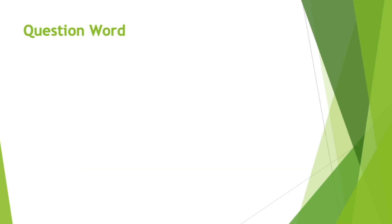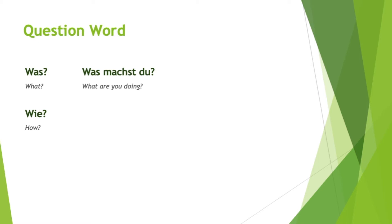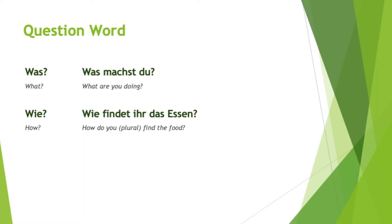But what if you want to ask 'when does she work' or 'where does she work'? You need question words. You already know some of them: 'was' means 'what,' for example 'Was machst du?' — What are you doing? 'Wie' means 'how,' for example 'Wie findet ihr das Essen?' — How do you guys find the food? What do you think about the food?